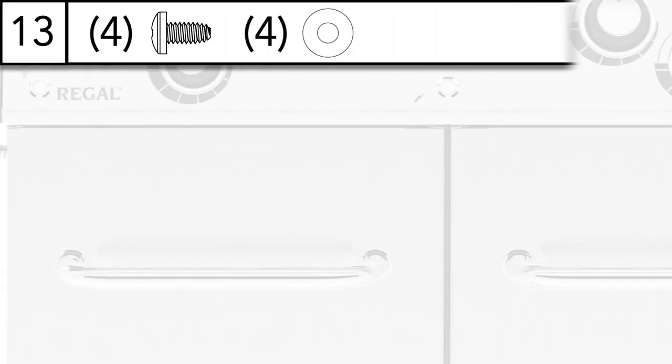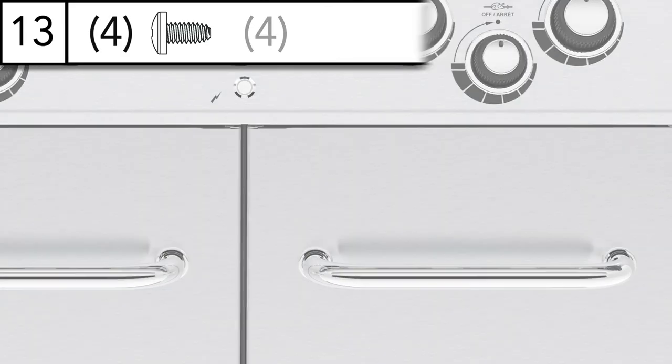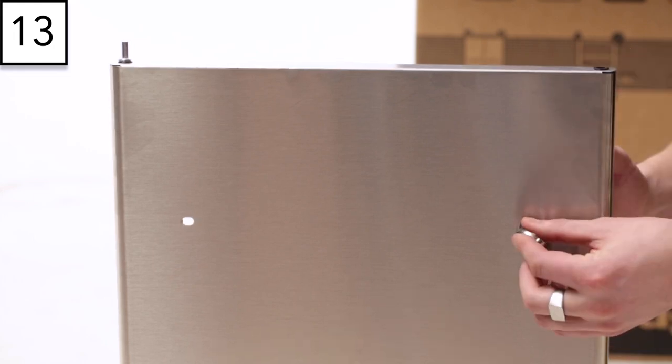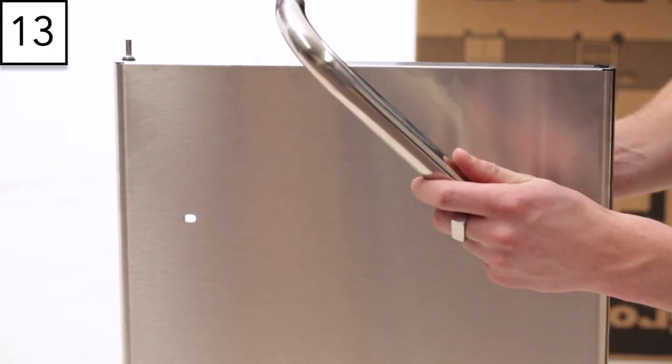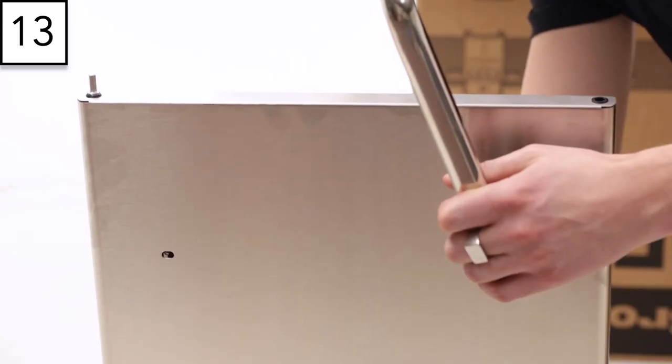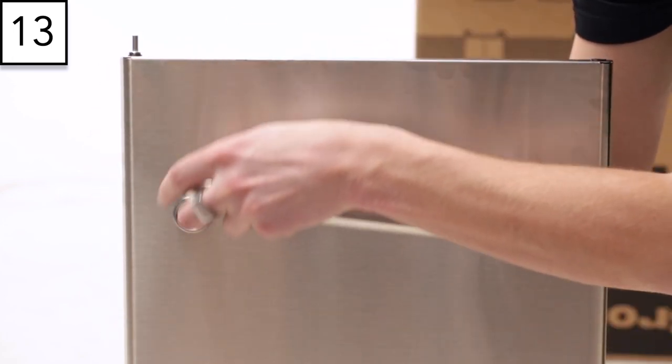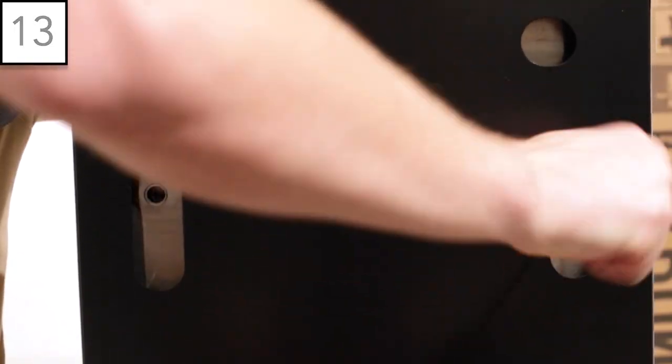Step 13: Install the handle on your door. Pass one bolt with washer through the door panel. Install the bezel and tighten partially. Repeat with the other bolt, washer and bezel, and fully tighten both sides with your screwdriver. Repeat for the other door.